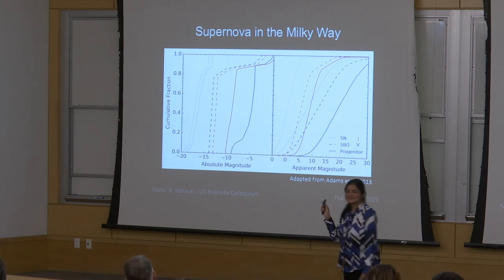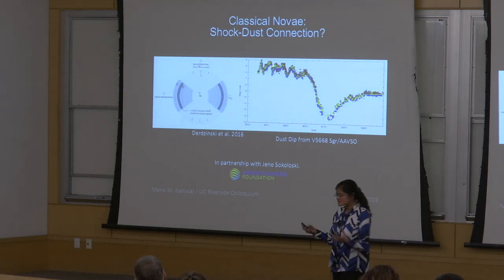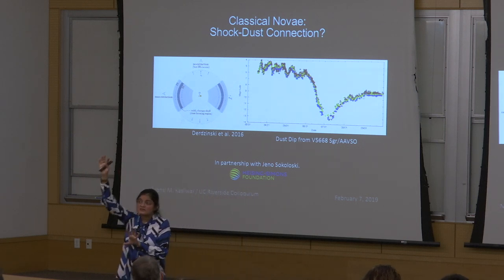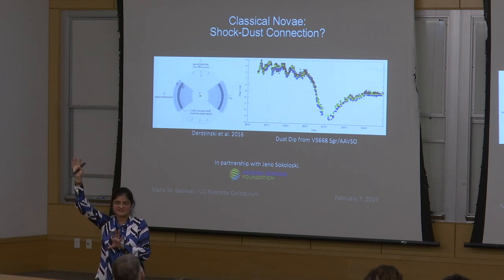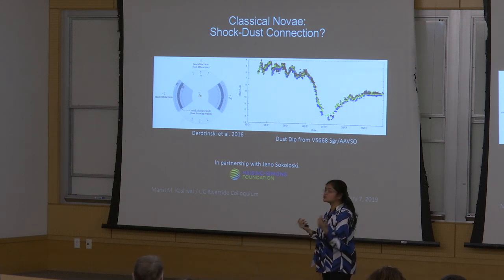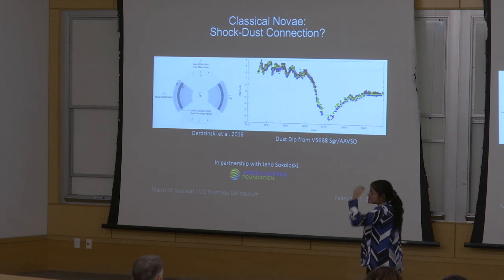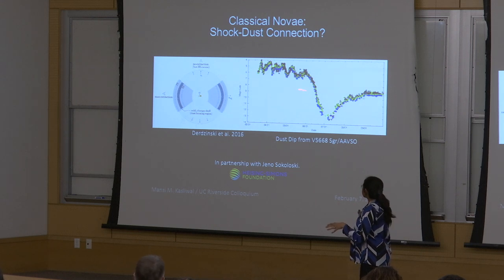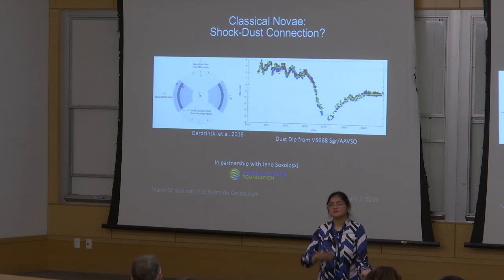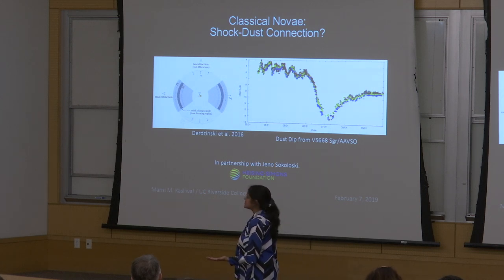Similarly with classical novae — white dwarfs where a little material is transferred and a thermonuclear runaway occurs, not as spectacular as supernovae, only about a million times as bright as the Sun — they are now showing shocks detectable in the gamma rays. The theoretical predictions are that every time you see gamma-ray shocks from classical novae, you should also see a dust dip in the infrared bands. This is something we can now test because we're imaging the whole area night after night, getting a complete inventory of J-band light curves of classical novae.